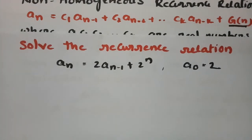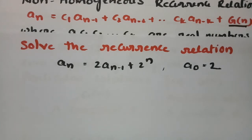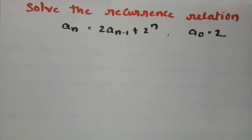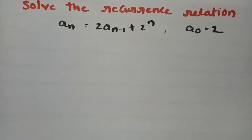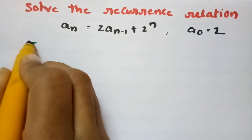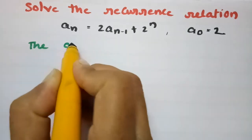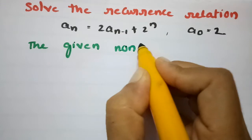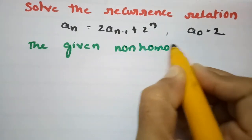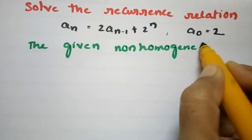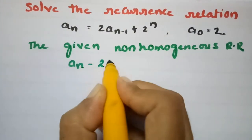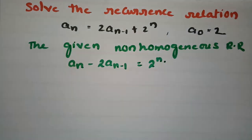Solve the recurrence relation: aₙ = 2aₙ₋₁ + 2ⁿ. The given non-homogeneous recurrence relation can be rewritten as aₙ − 2aₙ₋₁ = 2ⁿ.